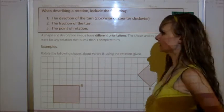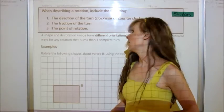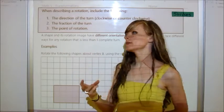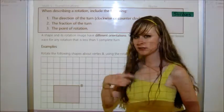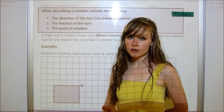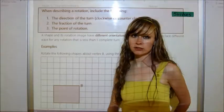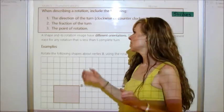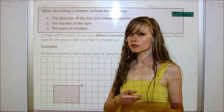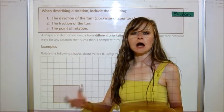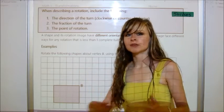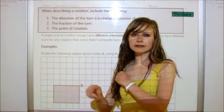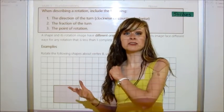So using that information that I just shared, you need to describe rotations using these three things. So you need to tell the direction of the turn. So you have to say if it's counterclockwise or clockwise. You have to say the fraction of the turn. So if it's one quarter, one half, three quarters, or one whole. And then you have to tell the point of rotation. Now the point of rotation is like about the center of the wheel, about Ms. Bashford's feet. It's usually going to just be a letter on a corner or a vertex of a shape.